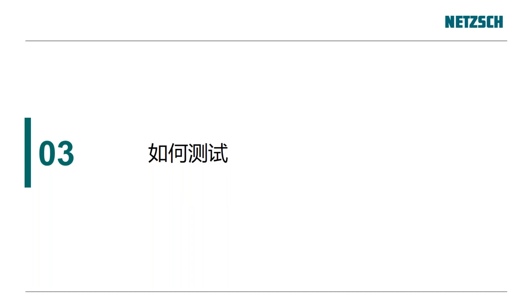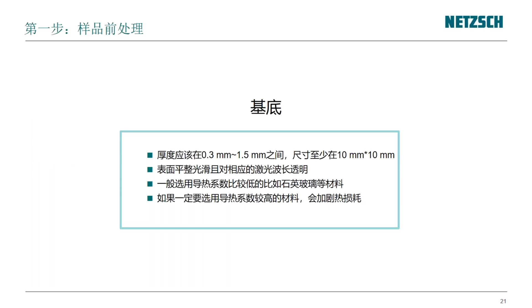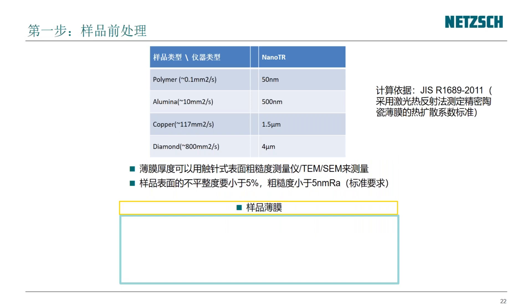接下来简单介绍一下这两款设备如何进行测试，因为很多用户对这部分很感兴趣，想知道自己的薄膜要怎么做才能测试。首先薄膜肯定要有一个基底，基底尺寸要求至少10mm×10mm，厚度在0.3到1.5mm之间。如果采用RF模式，基底一定要是透光的；如果是FF模式则没有这个要求。一般我们建议选用导热系数比较低的材料作为基底，比如石英玻璃。如果采用导热系数较高的材料，会加剧薄膜本身的热损耗，从而对测试曲线有一定影响。